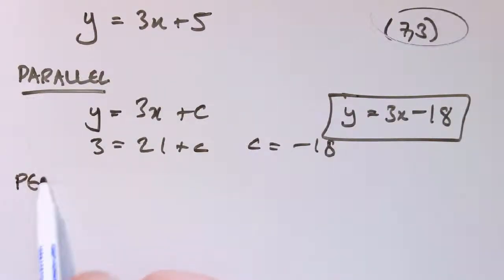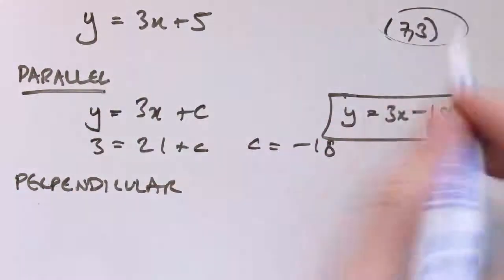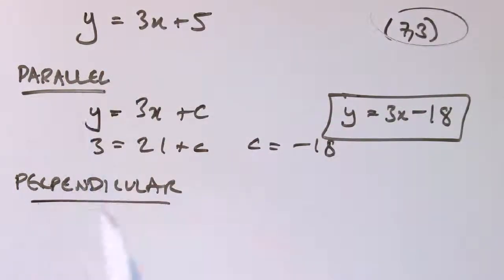And if it's perpendicular, a perpendicular line we're looking for, one that's perpendicular to this and goes through this point, then I would just take that gradient 3, take the negative reciprocal to make it minus 1/3 x plus a constant.